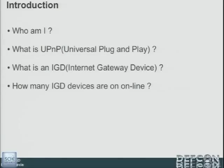IGDs are mostly found on DSL routers and some other devices. Cable modems not so much, because cable modems are usually bridged. But if something is routing and doing PPP, it's probably doing IGD. And we've been working with Dan Kaminsky on how many IGD devices are online — and it's a staggering number. I personally have seen half a million devices across different countries open and accepting UPnP requests.